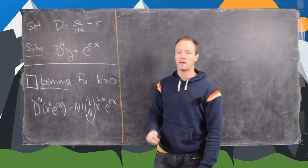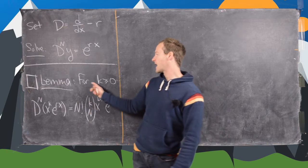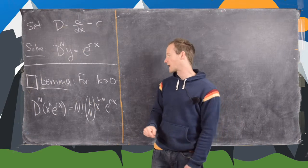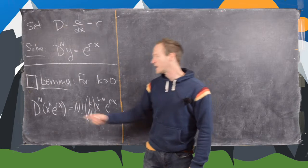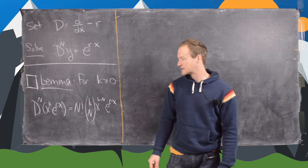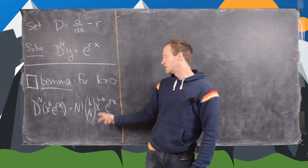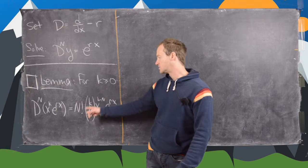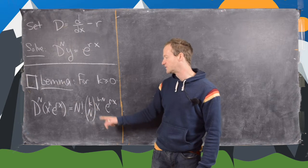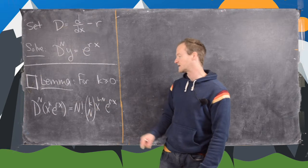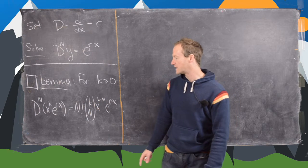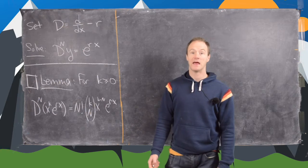We're going to use the following lemma in order to solve this. For k greater than or equal to zero (a whole number), we have this operator to the nth power on x to the k times e to the rx equals n factorial times the binomial coefficient k choose n, times x to the k minus n times e to the rx. Let's prove this lemma first — we'll prove it with induction on n.